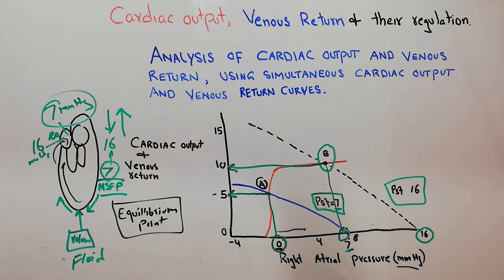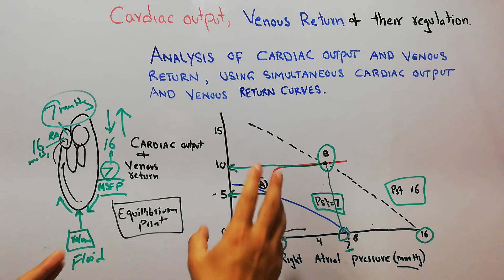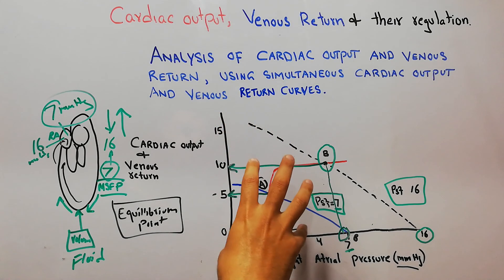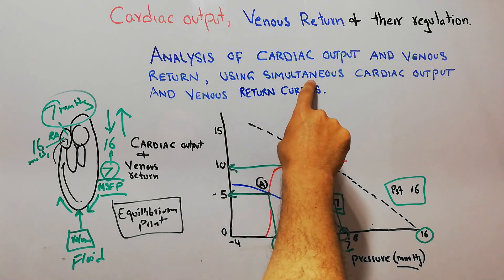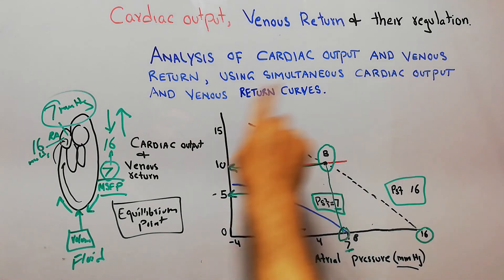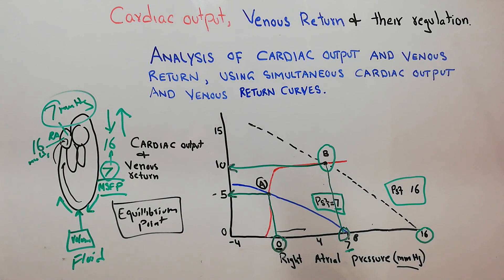This has been shown here with a simultaneous cardiac output and venous return curve, demonstrating that by increasing mean systemic filling pressure, both cardiac output and venous return can be increased.